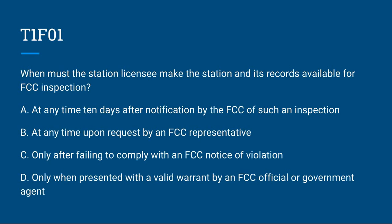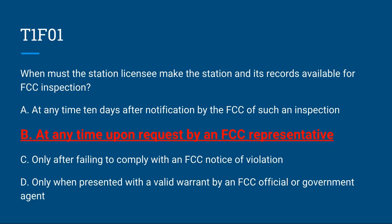T1F01: When must the station licensee make the station and its records available for FCC inspection? A. At any time 10 days after notification by the FCC of such an inspection. B. At any time upon request by an FCC representative. C. Only after failing to comply with an FCC notice of violation. Or D. Only when presented with a valid warrant by an FCC official or government agent. Correct answer is B: at any time upon request by an FCC representative.